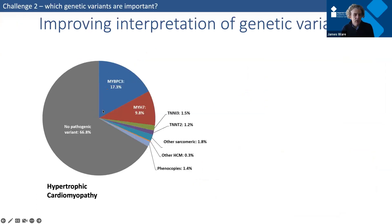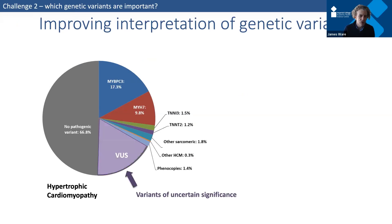The second challenge is that laboratories often find variants they don't understand because they're very rare or haven't been seen before — and that was a big challenge with titin too, since it's so large that most people have a DNA change somewhere. Which changes are actually important? Solving this challenge actually kills two birds with one stone: many cases of inherited conditions that are unexplained could be explained if we could figure out which of these unexplained variants were truly important, accounting for another big slice of the pie shown here in purple.